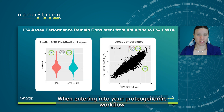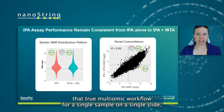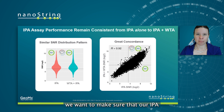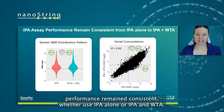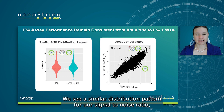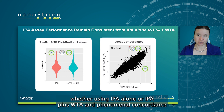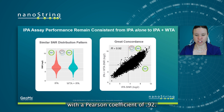When entering into your proteogenomic workflow — that true multi-omic workflow for a single sample on a single slide — we wanted to make sure that our IPA performance remained consistent, whether you use IPA alone or IPA and WTA. We see a similar distribution pattern for our signal-to-noise ratio whether using IPA alone or IPA plus WTA, and phenomenal concordance with a Pearson coefficient of 0.92.